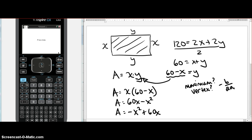So let's use negative b over 2a to find the x value of the vertex, and that would be negative 60 divided by negative 2, which is 30. So my x value is 30. That means that my y value is also, in this case, 60 minus 30, so y is also 30.